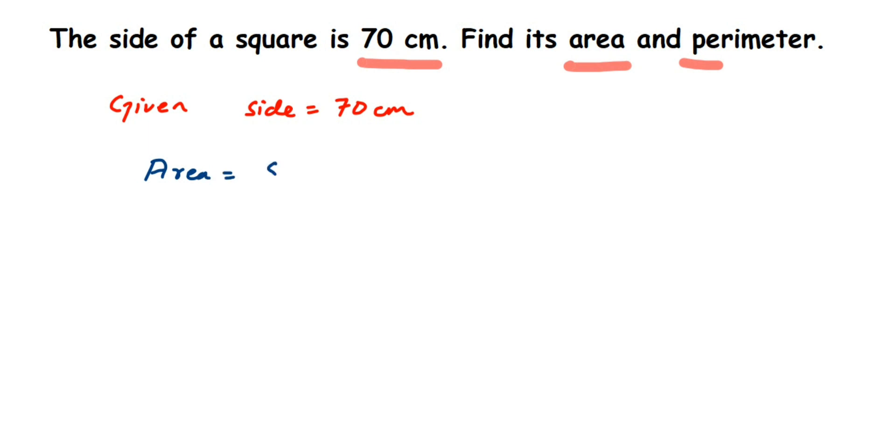Side multiplied by side, or you can write side whole square. Now side here is 70, so 70 multiplied by 70, which will be equal to 4900. Seven sevens are 49 and then just put two zeros, so 4900 centimeter square is the area.